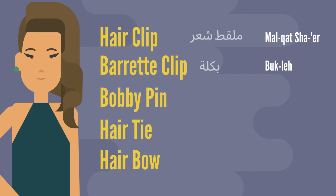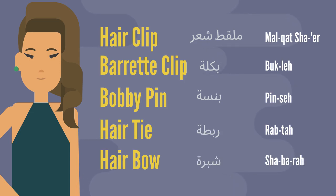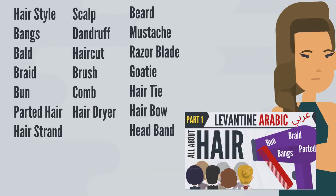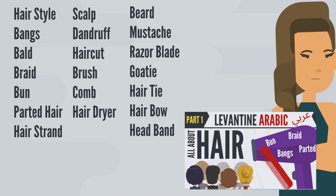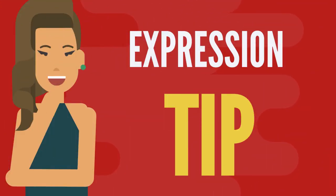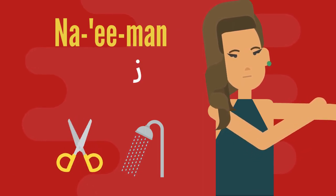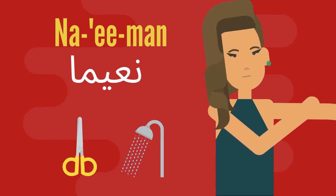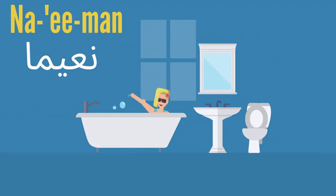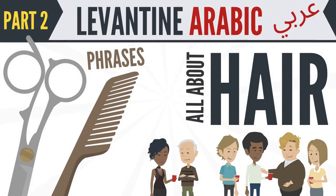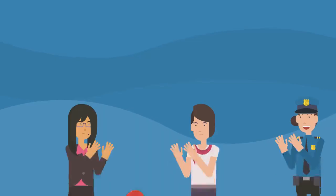The rest of the terms are covered in part one — don't forget to check it out, the link is in the description below. I wanted to close with the expression tip that I love to use when it comes to hair: 'naiman', 'naiman'. You can never go wrong saying that. You say 'naiman' if someone does anything to their hair — brush it, cut it, style it, color it, or even wash it. After a bath, you tell someone 'naiman'.